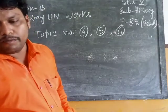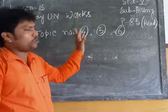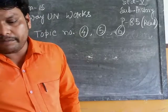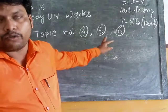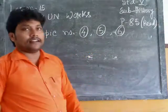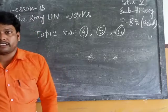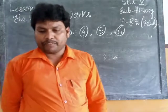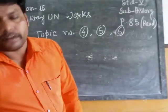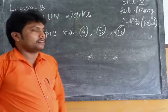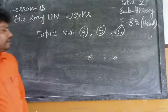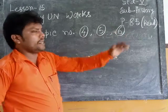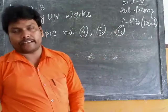The three other organs are: topic number 4, the Economic and Social Council; number 5, the International Court of Justice; and number 6, the Trusteeship Council. We will discuss these three organs today.